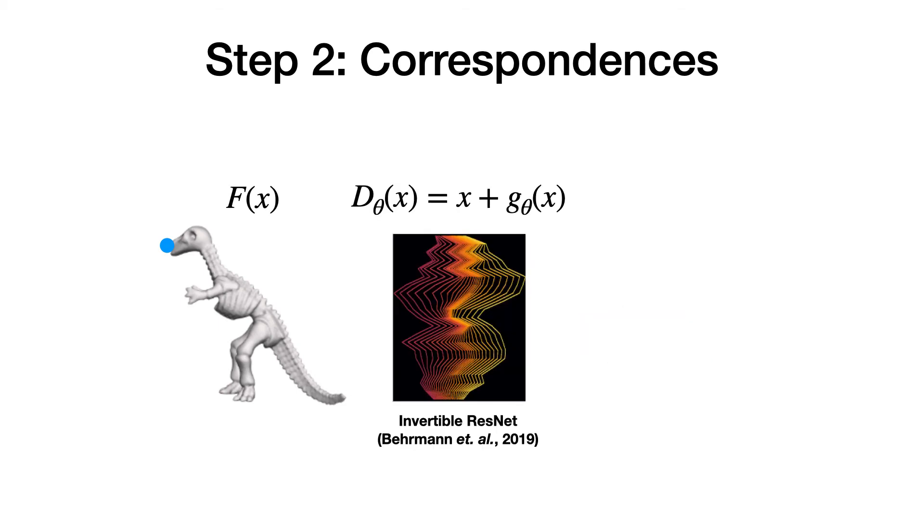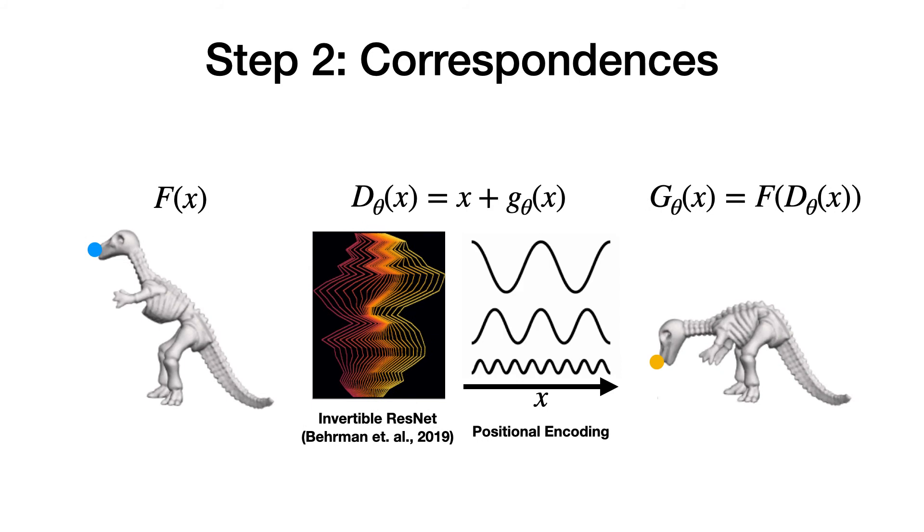To achieve invertibility, we leverage the invertible residual network architecture. However, naively doing so results in overly smooth deformation without any rotation. To alleviate this issue, we extend the invertible residual block with positional encoding. This allows us to generate deformation with appropriate rotation.